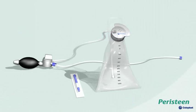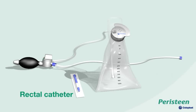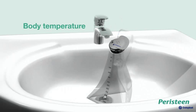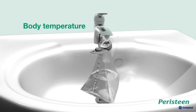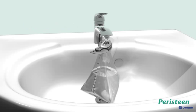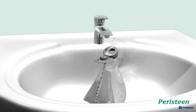The Peristeen anal irrigation system contains everything you need to irrigate your bowels. You'll be able to carry out the procedure without the help of a carer, even if you have low dexterity. The water must have body temperature — if it's too hot it may harm the delicate lining of the bowels, and if it's too cold it may cause cramps. To function properly, you must fill the bag completely, even though you will not use all the water for your irrigation.